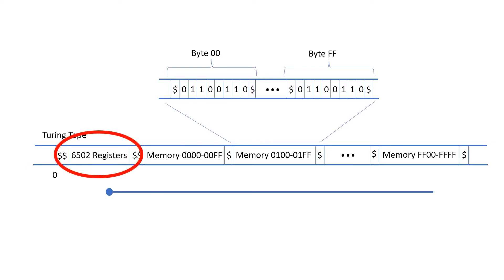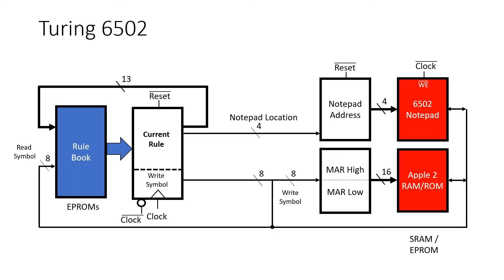One way to expand a Turing machine is to have multiple tapes. It's been shown that having multiple tapes doesn't actually give you any extra functionality, but it can give you extra speed. So I'm going to separate out the 6502 registers in the emulation, and we can see that reflected in the design of the Turing 6502. But now I want to walk through the steps that led to this final design, which does operate in real time.